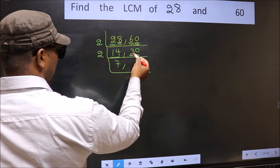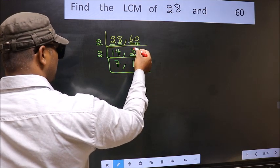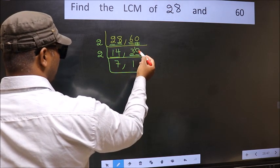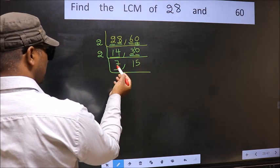First number 3, a number close to 3 in 2 table is 2×1, 2. 3 minus 2, 1 carried forward to make 10. When do we get 10 in 2 table? 2×5, 10. Now here we have 7.